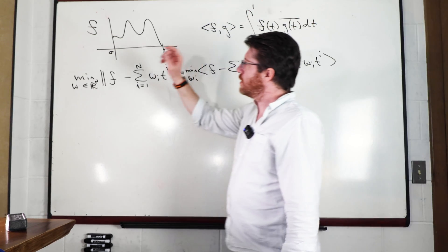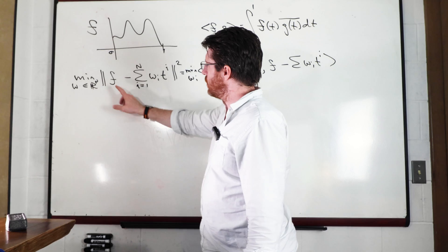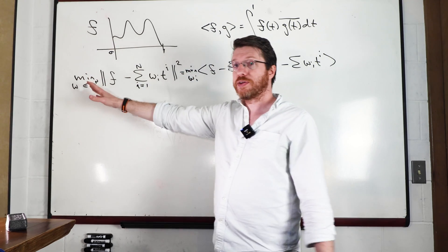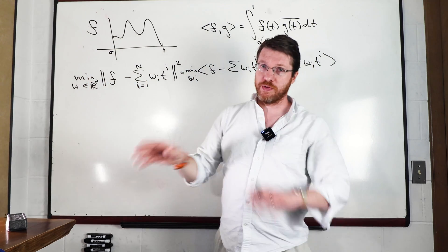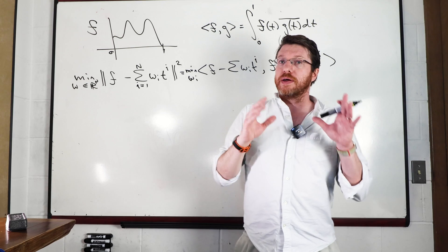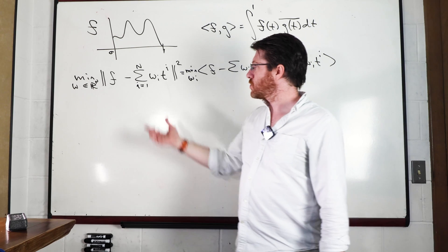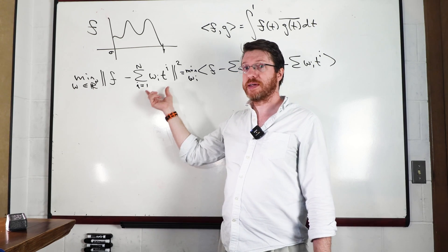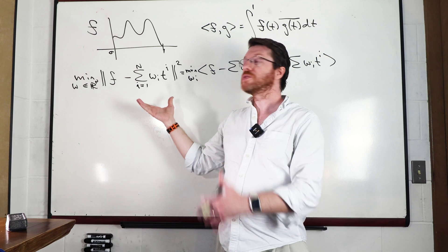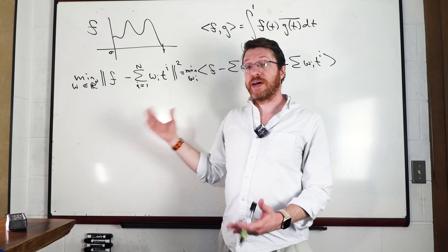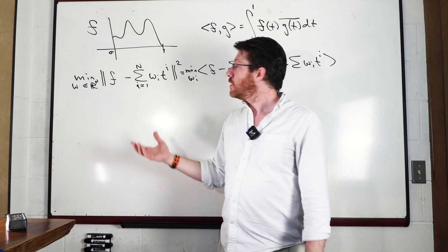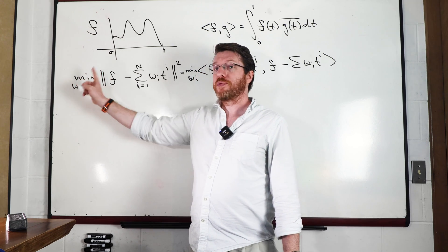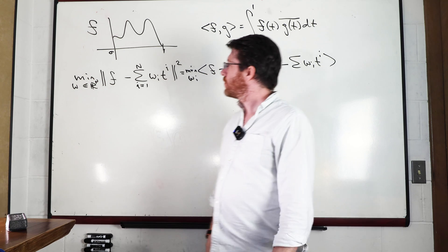We are going to be looking for the minimizer of the L2 norm. We can write 'minimum' because our last theorem told us that as long as we're operating over a closed subspace — the subspace generated by the monomials, which is finite-dimensional and therefore closed — we are guaranteed that there is actually a proper minimum defined.